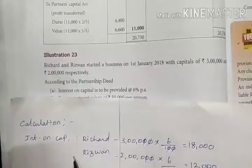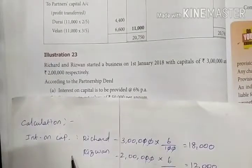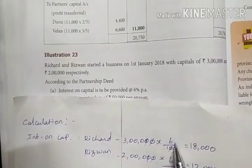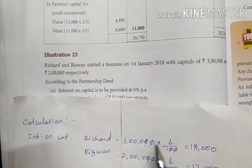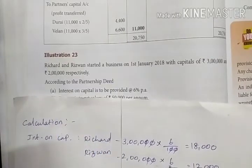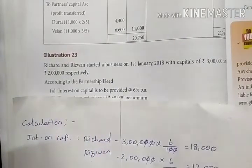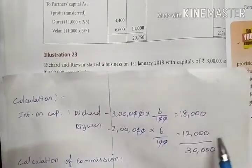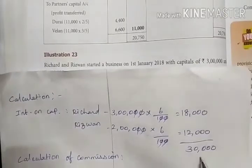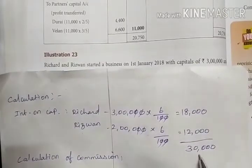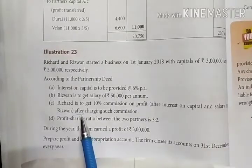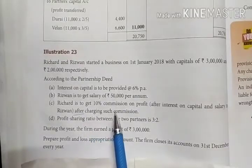Calculation: Interest on capital — Richard: 3,00,000 into 6 by 100 = Rs. 18,000. Rizwan: 2,00,000 into 6 by 100 = Rs. 12,000. Total interest on capital: Rs. 30,000. There is no interest on drawings in this firm.